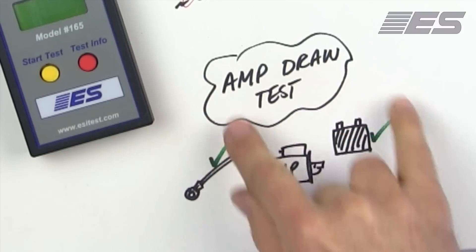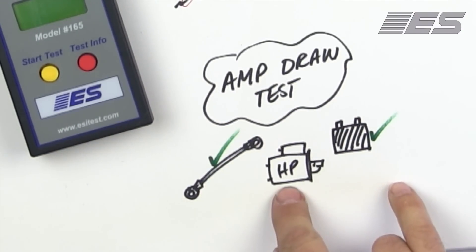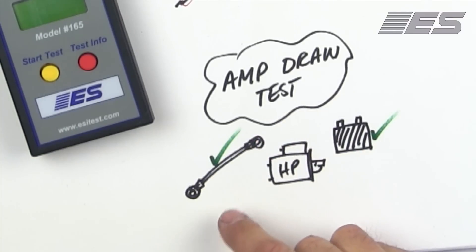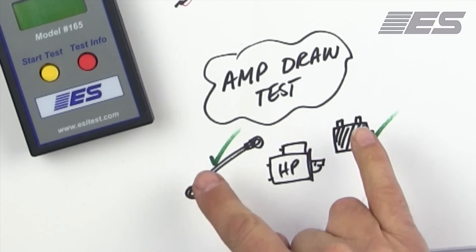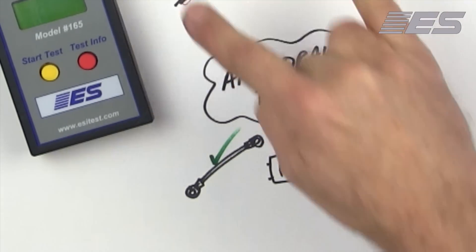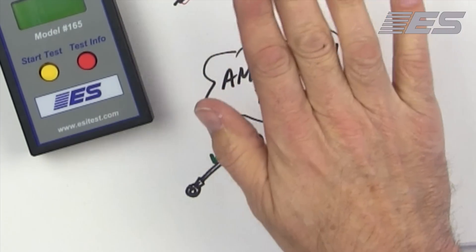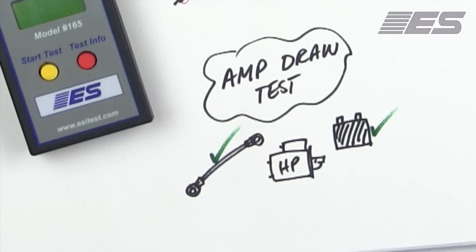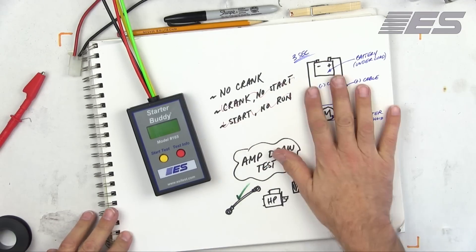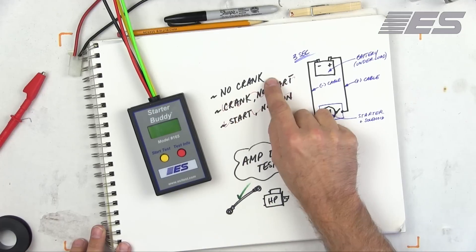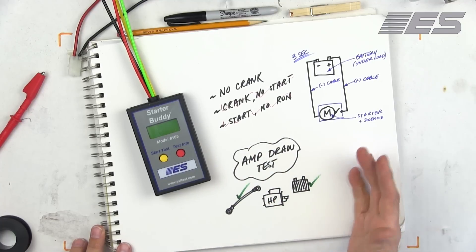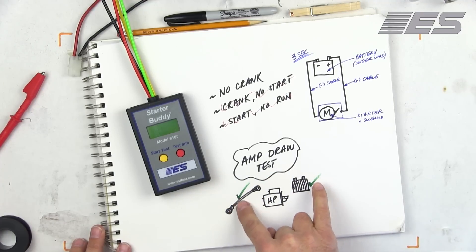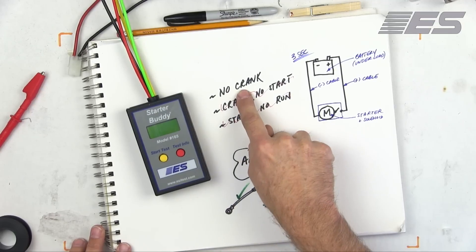Well, here's the problem. The amp draw test requires these two to be perfect to test this, but if it's a no crank, then it's one of these three, and we don't know which one it is. So fixing the cables and charging the batteries to do this test means that you're probably going to fix whatever is wrong up here by just getting ready to do this test correctly. So if you're doing the amp draw test now, it's not a valid test unless you've confirmed that the cables are perfect and the battery is perfect.